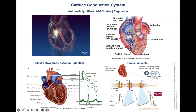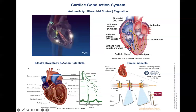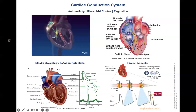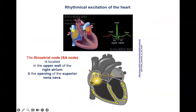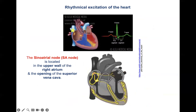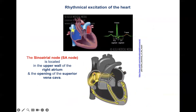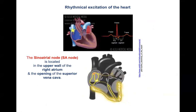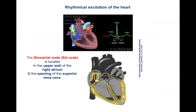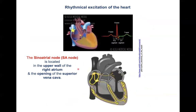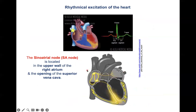The heart is fascinating — it is capable of self-excitation. In this animation, we see in yellow the conduction system of the heart. It follows a very strict hierarchy. In the intact heart, the primary pacemaker is the so-called sinoatrial node, or SA node.